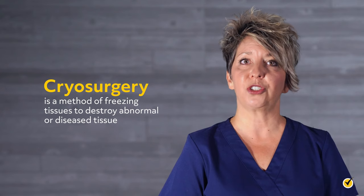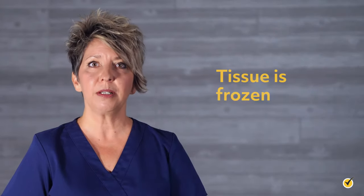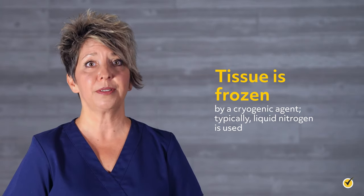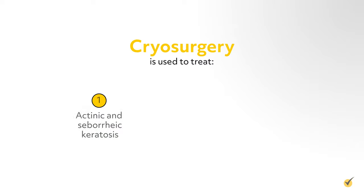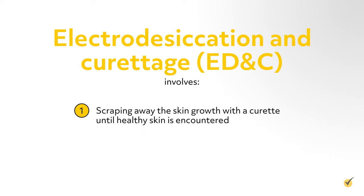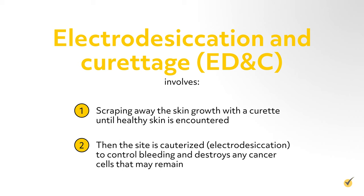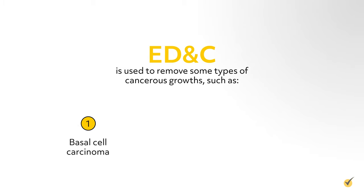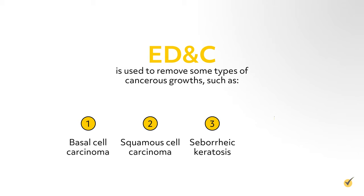Depending on the nature of the skin disease, one of the following surgical procedures may be the choice of treatment. Cryosurgery is a method of freezing tissues to destroy abnormal or diseased tissue, typically using liquid nitrogen. It is used to treat actinic and seborrheic keratosis, viral warts, and precancerous lesions on the skin. Electrodesiccation and curettage (ED&C) involves scraping away the skin growth with a curette until healthy skin is encountered, then cauterizing the site to control bleeding and destroy any remaining cancer cells. ED&C is used to remove basal cell carcinoma, squamous cell carcinoma, seborrheic keratosis, and skin tags.